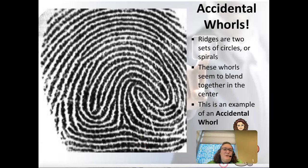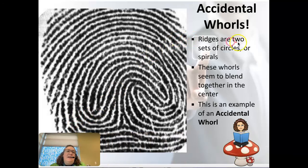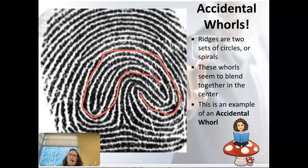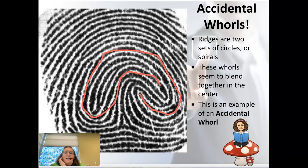Accidental whorls can be a little confusing, especially sideways. There are two sets of circles that sort of blend together in the middle, giving you a weird mushroom-shaped pattern. Following the line, it comes up, goes back, and folds over on itself — forming that mushroom shape top to bottom. That's how you tell an accidental whorl from a double loop, which forms an S-shape.